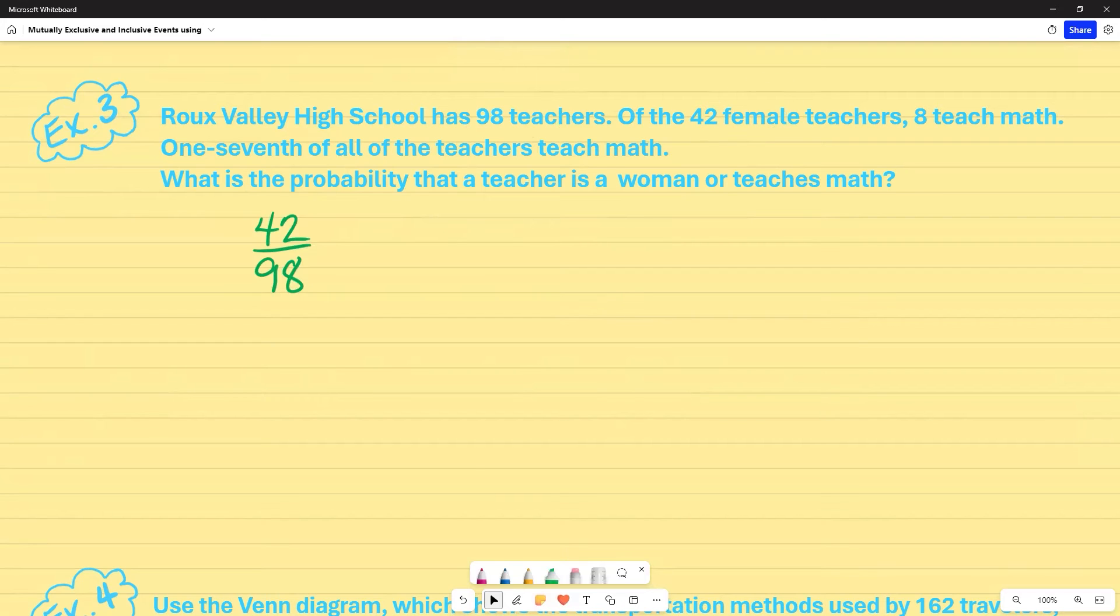It's asking what is the probability that a teacher is a woman and that's going to be 42 out of all of the teachers, which were 98. So 42 females right there. And it says or, so again, addition rule plus and teaches math. Well, it says that one seventh of all the teachers teach math. So that means one seventh of means to multiply all the teachers. There's 98 teachers. This is really 98 divided by seven, which leaves me with 14. 14 out of 98 teachers actually teach math. That's what this says. So what I'm looking for is a teacher who not only teaches math, but it's also a woman. So I've already accounted for that in this 14. So I'm going to have to subtract out the overlap and that will be eight. I was told in the word problem out of 42 female teachers, eight teach math. So I'm going to go ahead and deduct that. And once I simplify this, this is 24 out of 49.